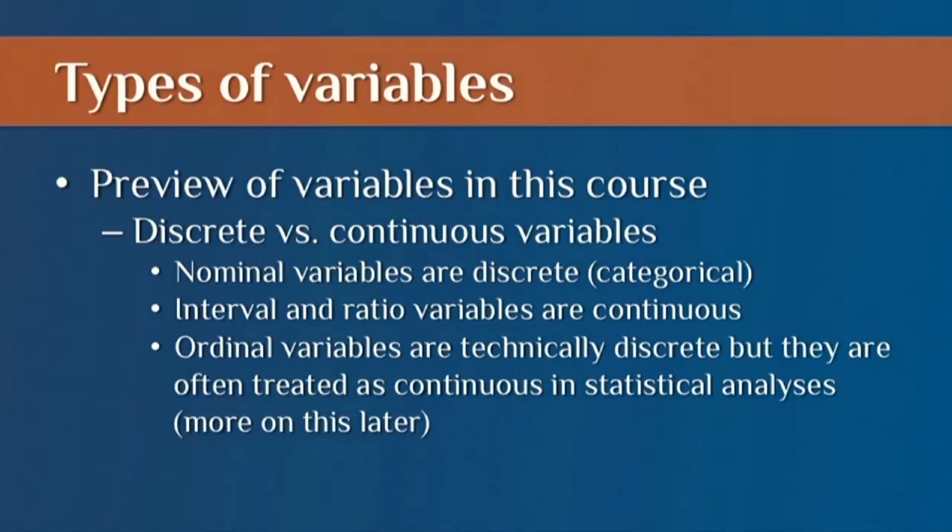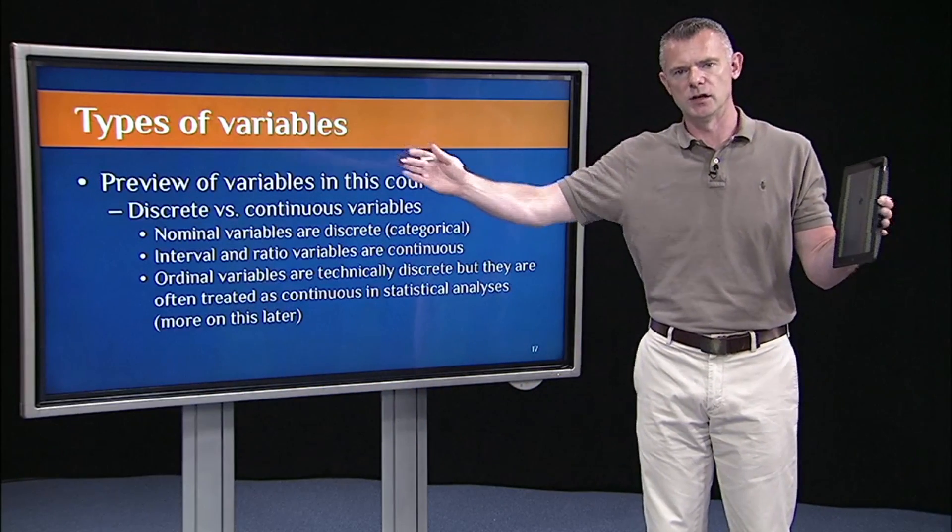Whereas continuous variables are like the interval and the ratio type, where there's just a continuum. So we have this scale on, say, like an intelligence test. And it's just a continuum.